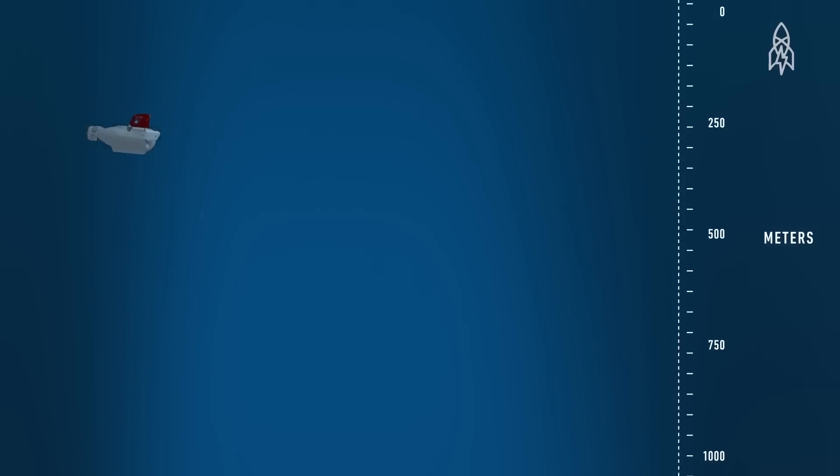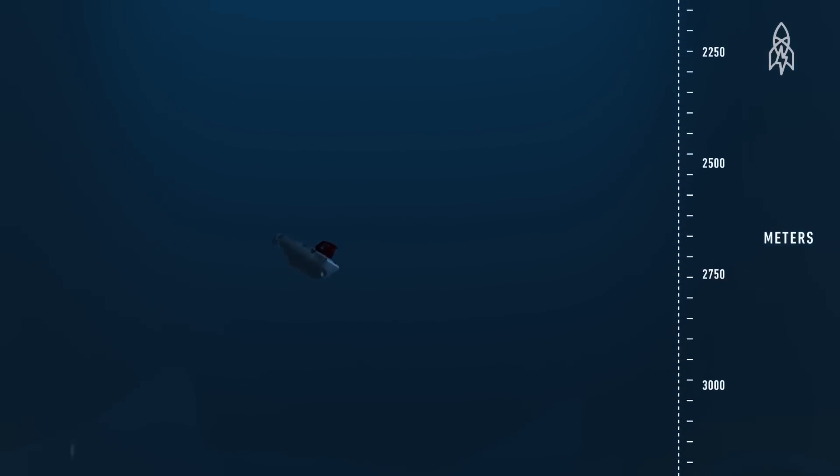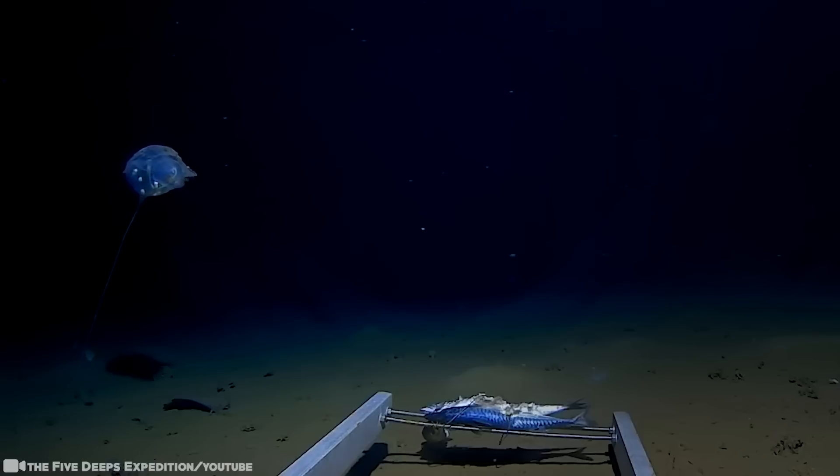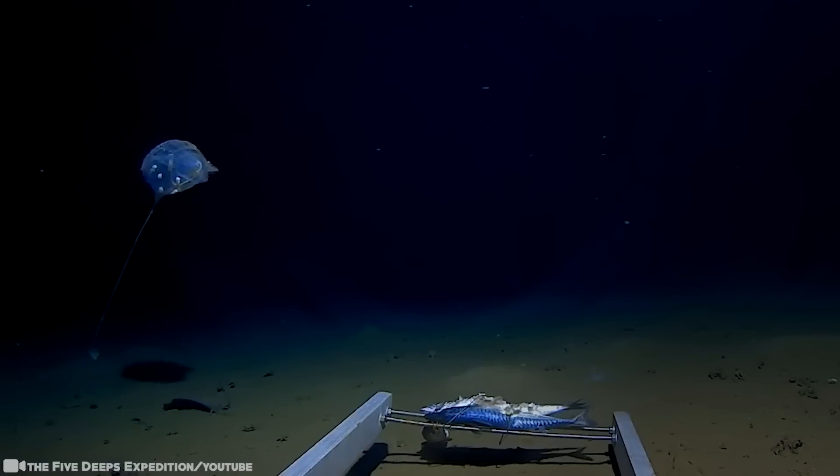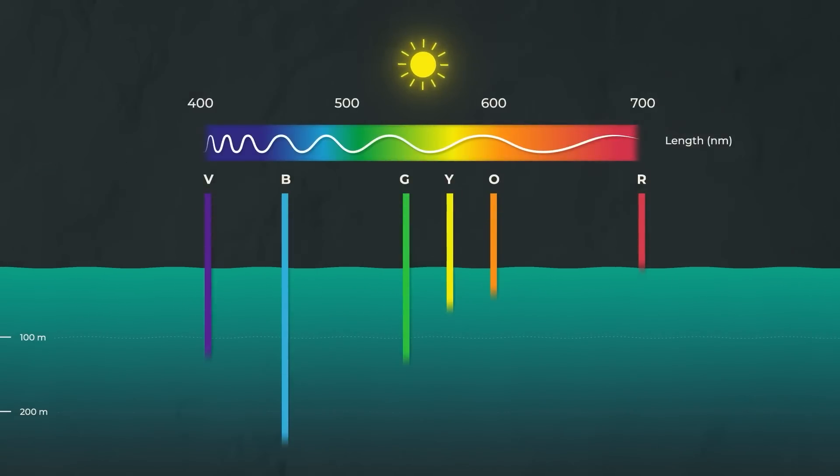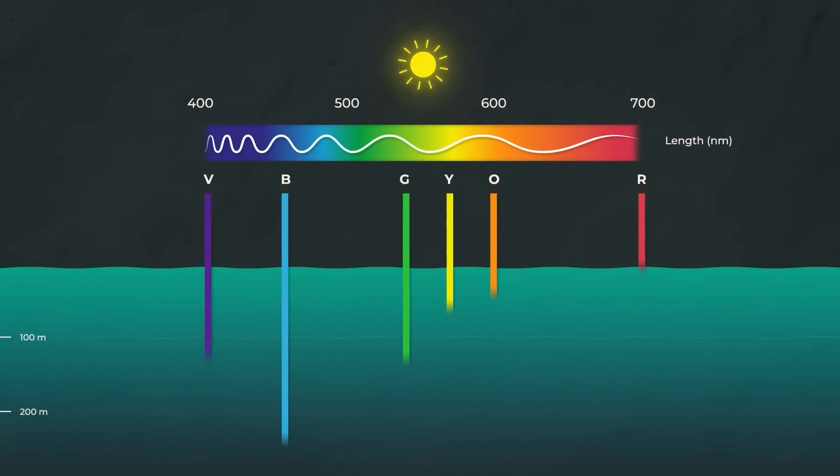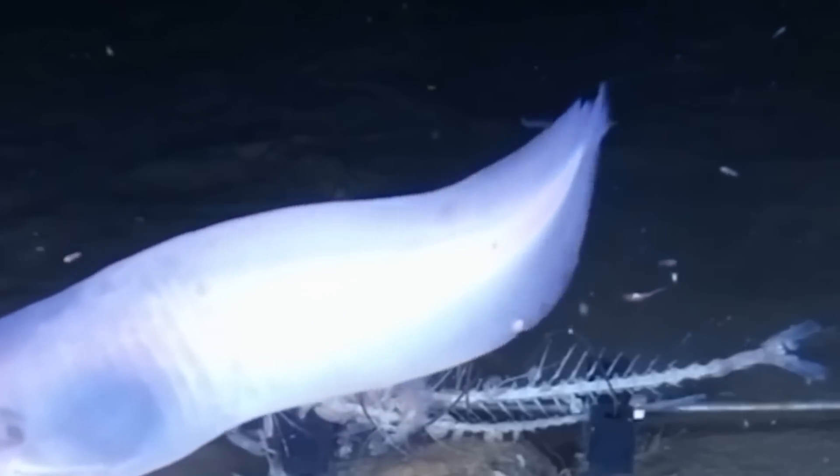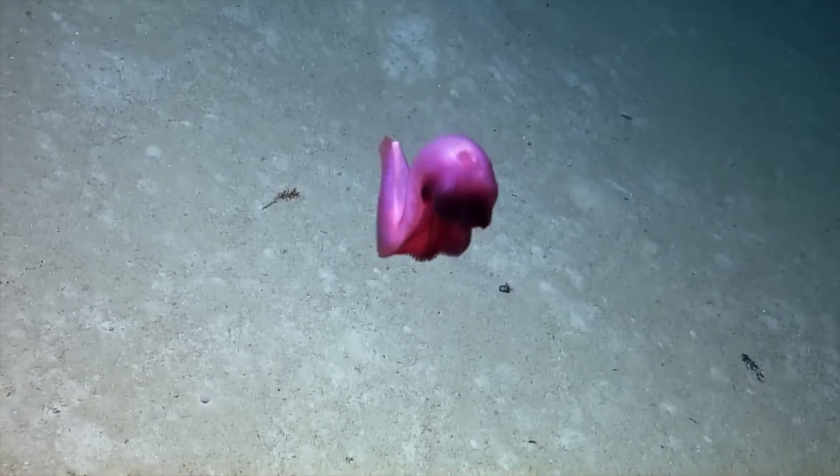The conditions of the Hadal Zone are hard to comprehend. The pressure at these depths is immense, roughly 1,000 times greater than at sea level. Near-freezing temperatures are a constant, and sunlight from the surface never reaches these depths, leading to an environment of perpetual darkness. But as life often does, it has found a way to adapt, even here.